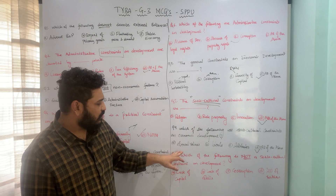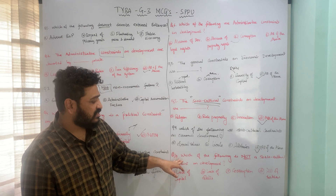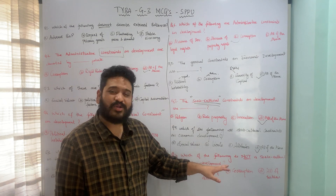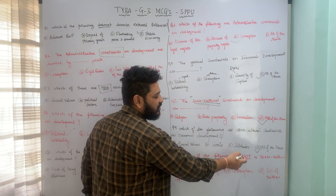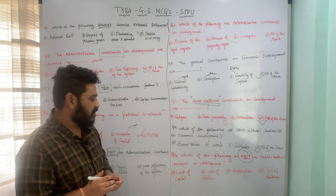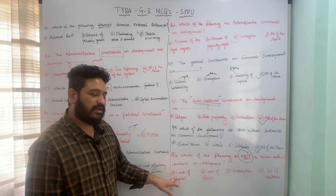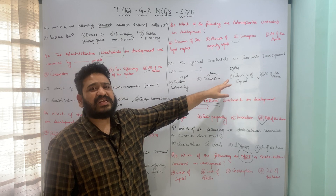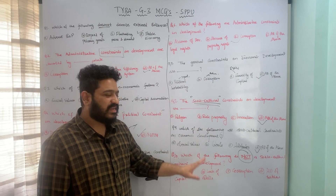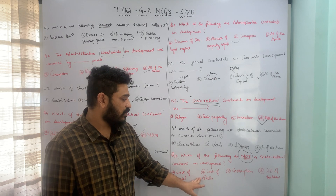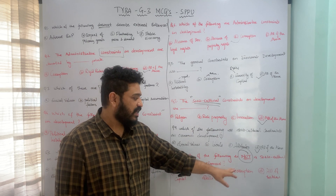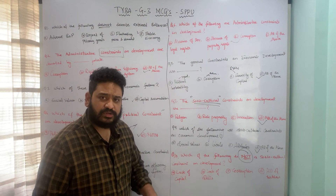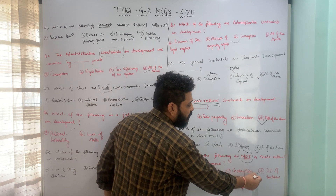The final question asks: which of the following is NOT a socio-cultural constraint? The options are: A) lack of capital, B) lack of skills, C) corruption, and D) all of the above. Lack of capital is a capital or economic constraint, lack of skills is a technological constraint, and corruption is an administrative constraint. None of these are socio-cultural constraints, so option D — all of the above — is the correct answer.